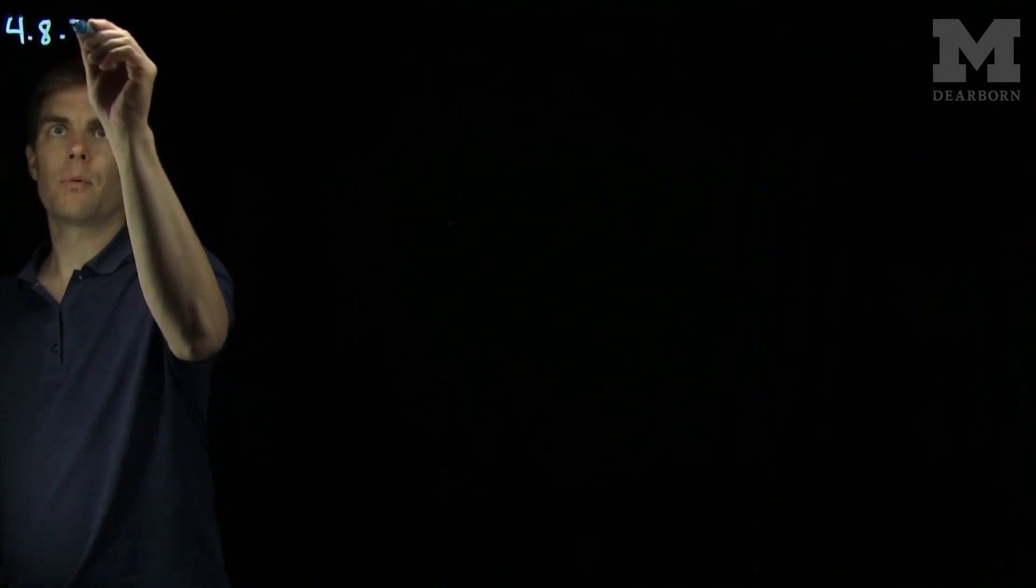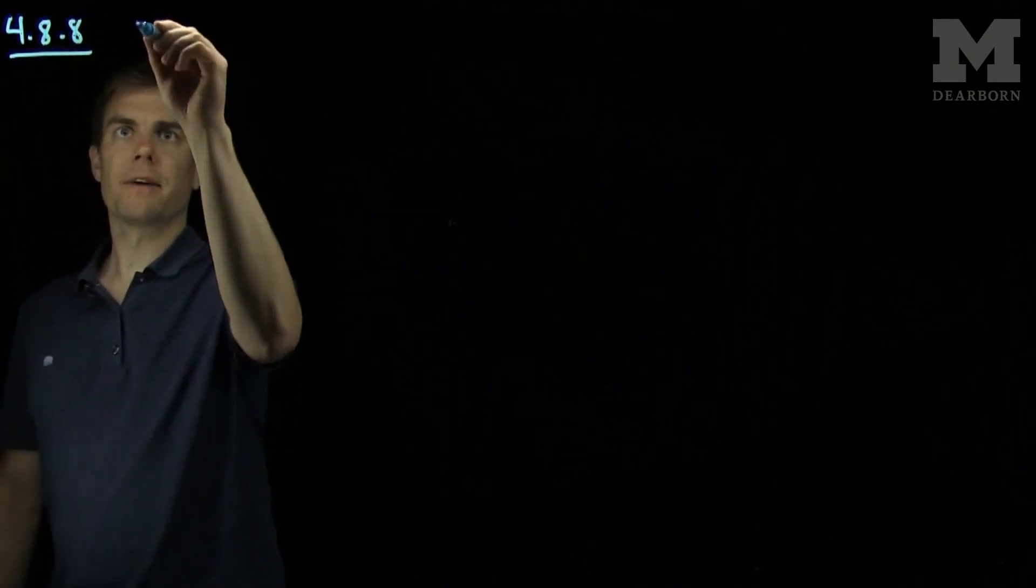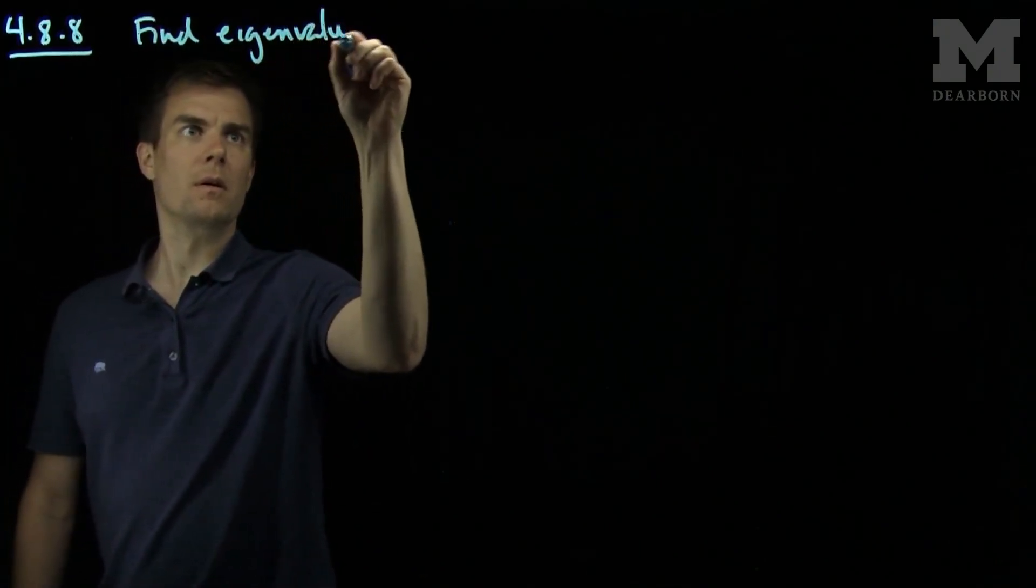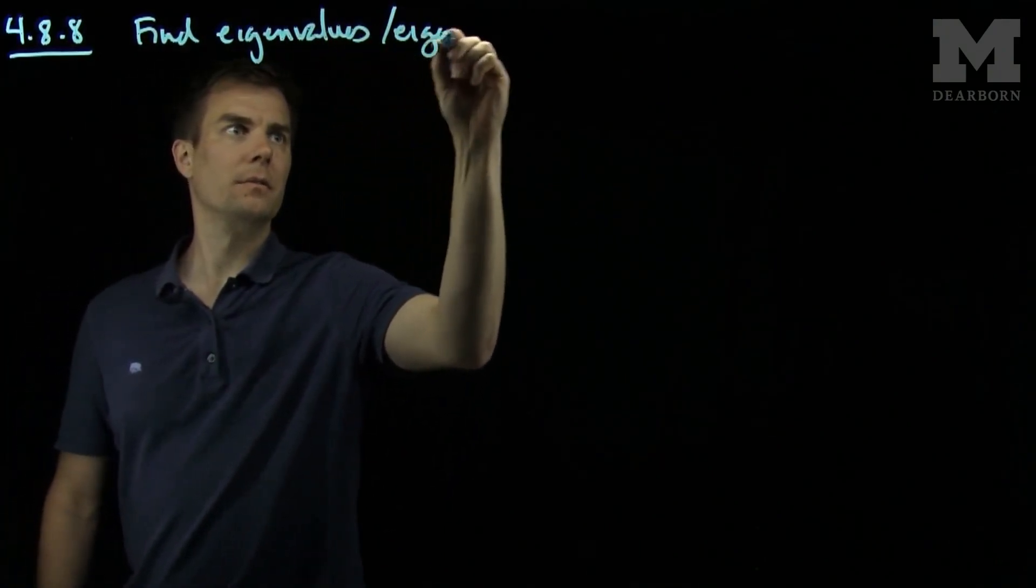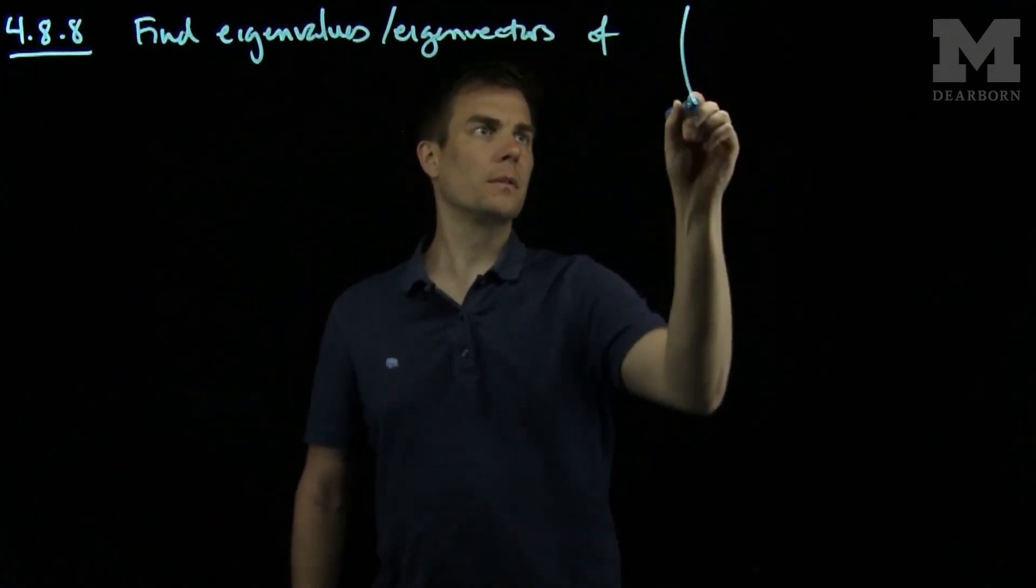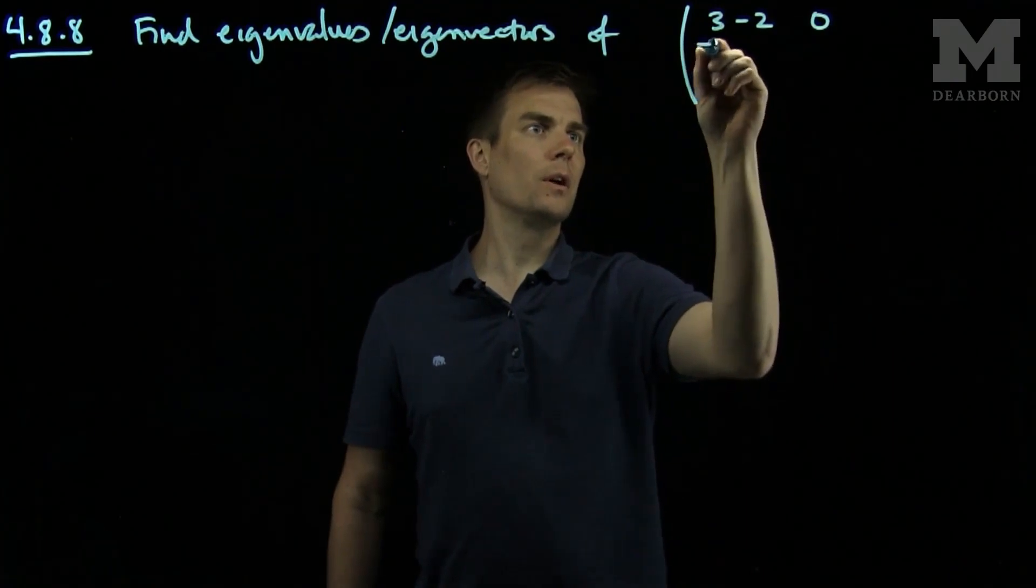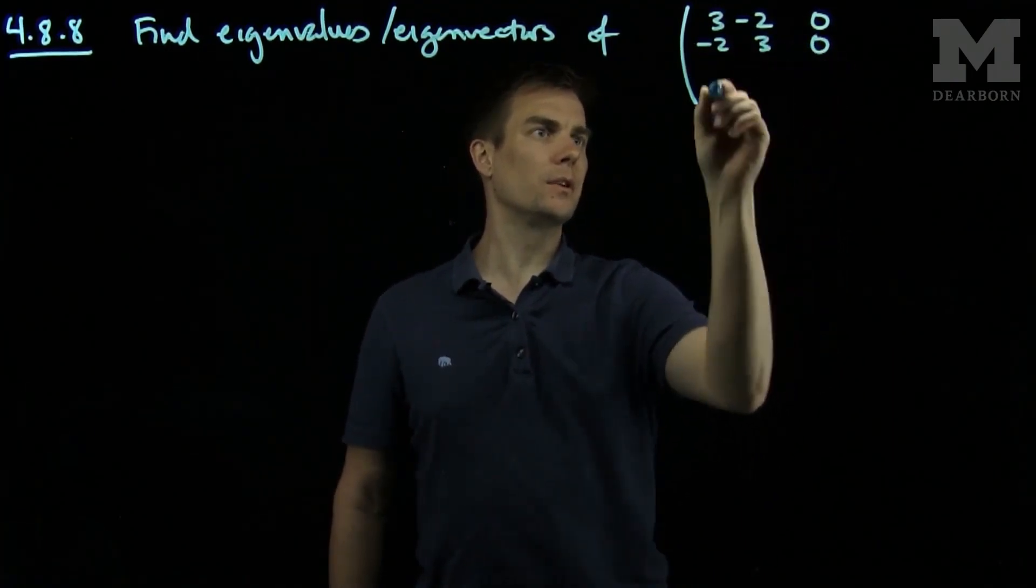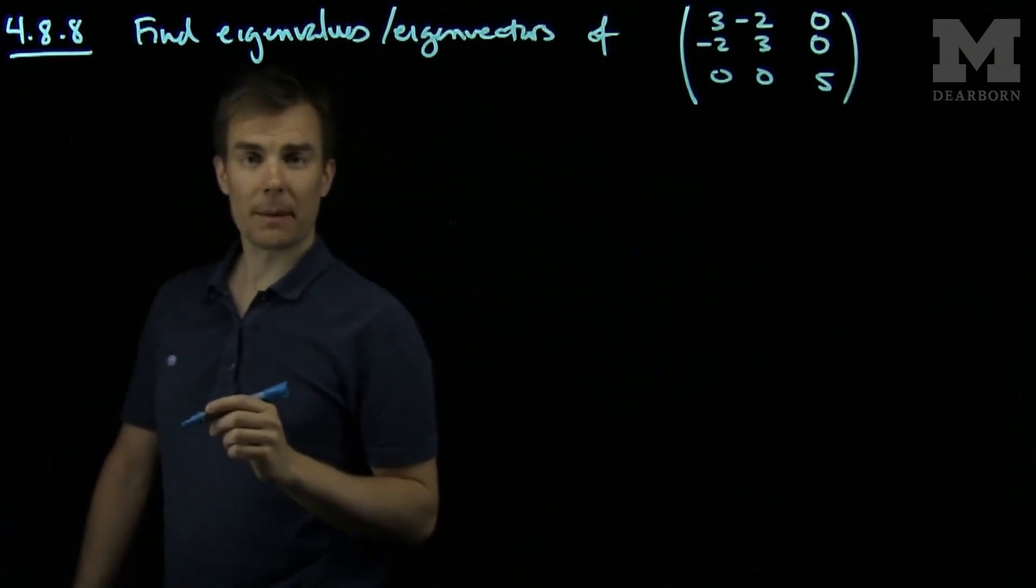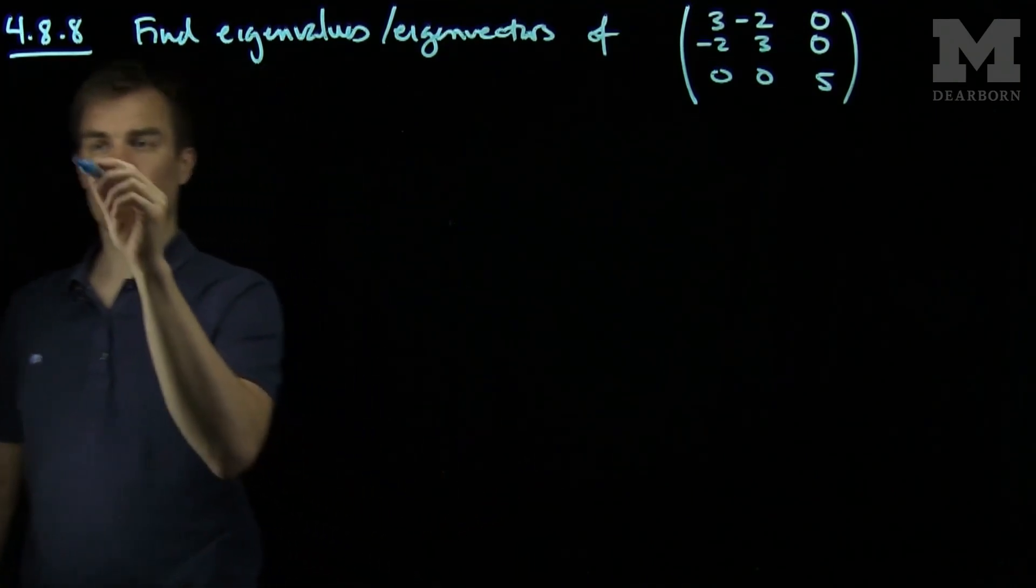Problem 4.8.8 asks us to find the eigenvalues and eigenvectors of the matrix: 3, negative 2, 0, negative 2, 3, 0, 0, 0, 5. To solve this problem we find the eigenvalues by computing the characteristic equation.